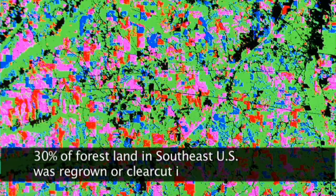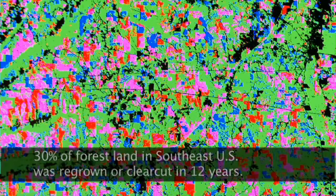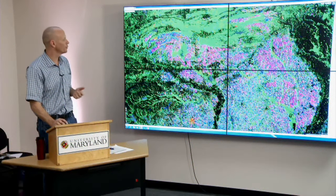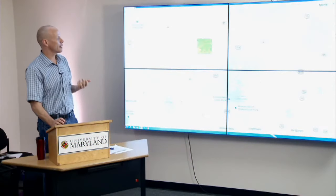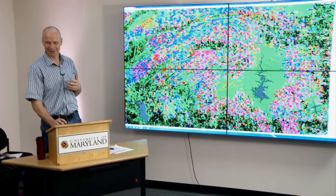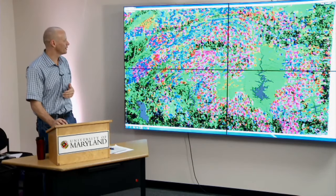Out of this ecozone in the southeast US, 30% of forest land either was regrown or lost during this period which is 12 years. It's incredible. Really trees are as crops here. You might want to rethink a definition of forest because it's a different thing. This is not really natural.